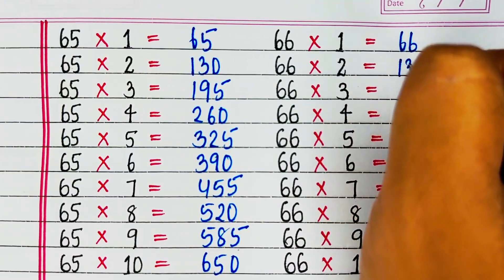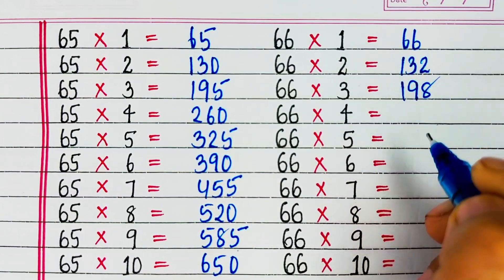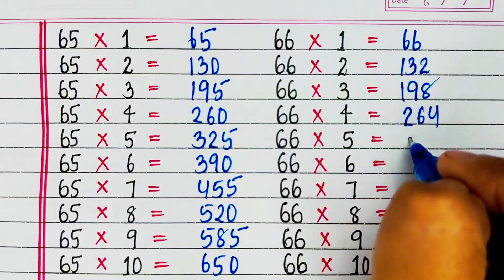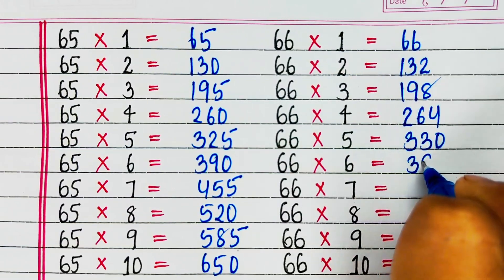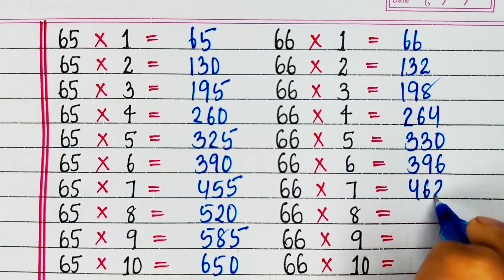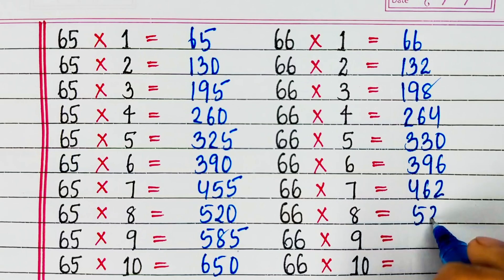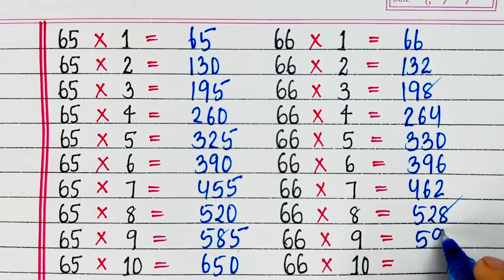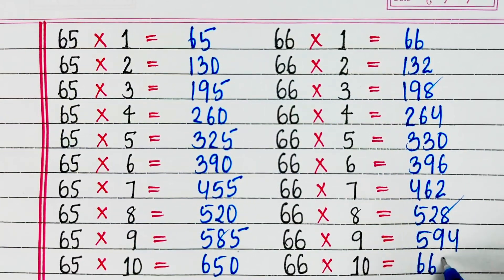Next is table of 66. 66 1s are 66, 66 2s are 132, 66 3s are 198, 66 4s are 264, 66 5s are 330, 66 6s are 396, 66 7s are 462, 66 8s are 528, 66 9s are 594, 66 10s are 660.